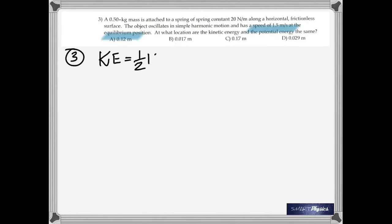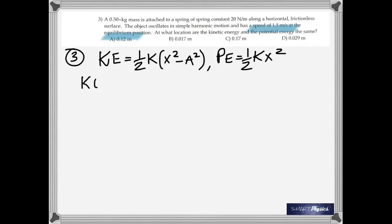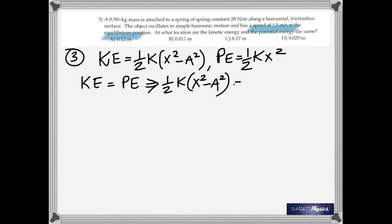The question asks at what location are the kinetic energy and potential energy the same. The equation for kinetic energy is one-half k times (a squared minus x squared), and potential energy is one-half k x squared. Since kinetic energy equals potential energy, you set these two equations equal to each other. The k's cancel and you get 2x squared equals a squared.